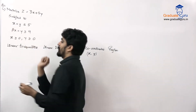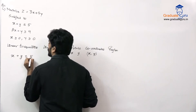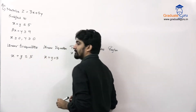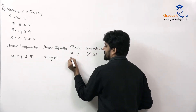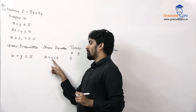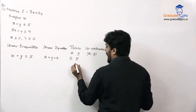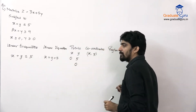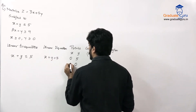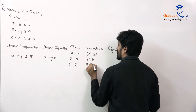So the first condition is x plus y is less than or equal to 5, which gives the equation x plus y is equal to 5. Substituting x = 0 gives y = 5, so the point is (0, 5). Substituting y = 0 gives x = 5, so the point is (5, 0).